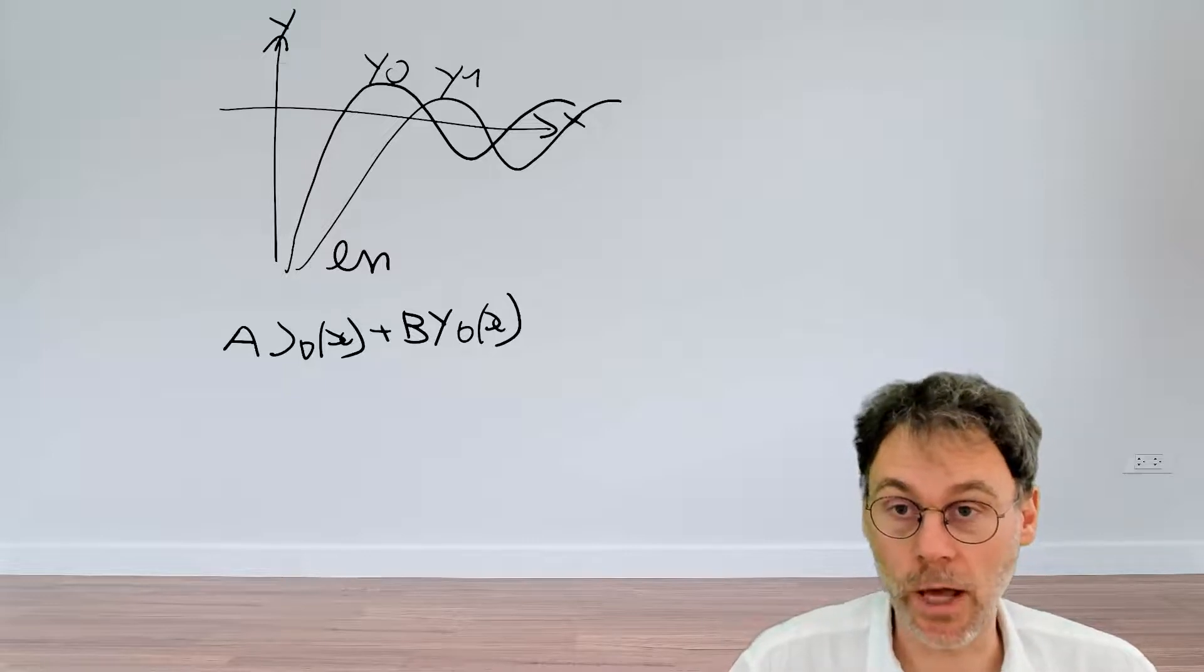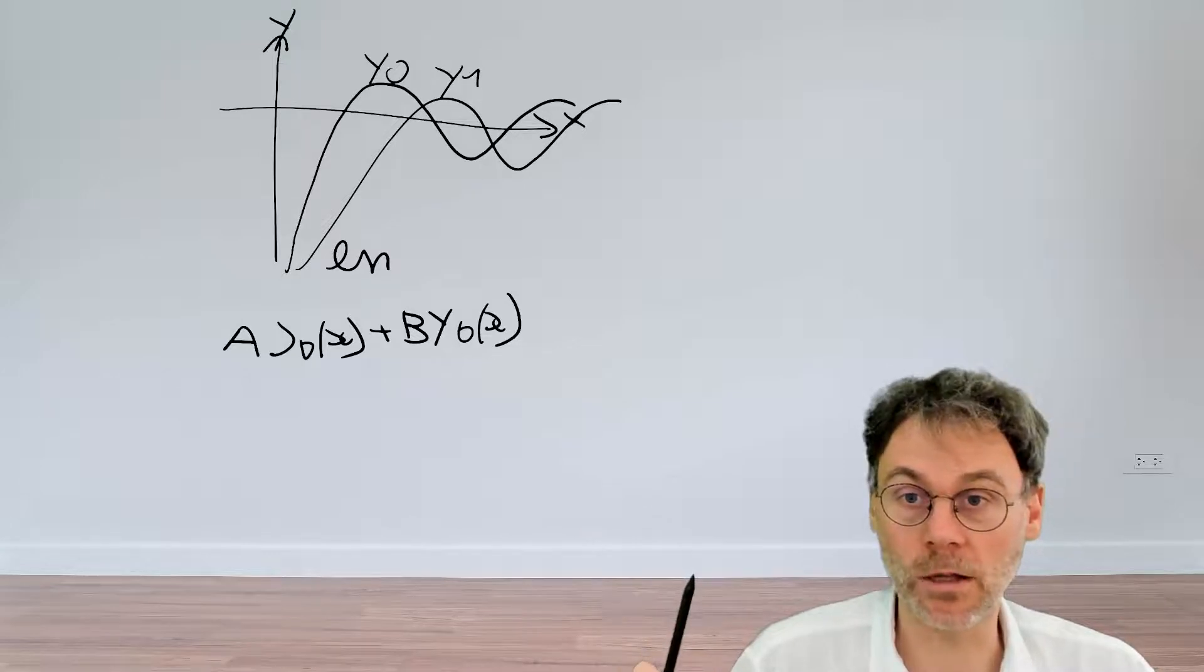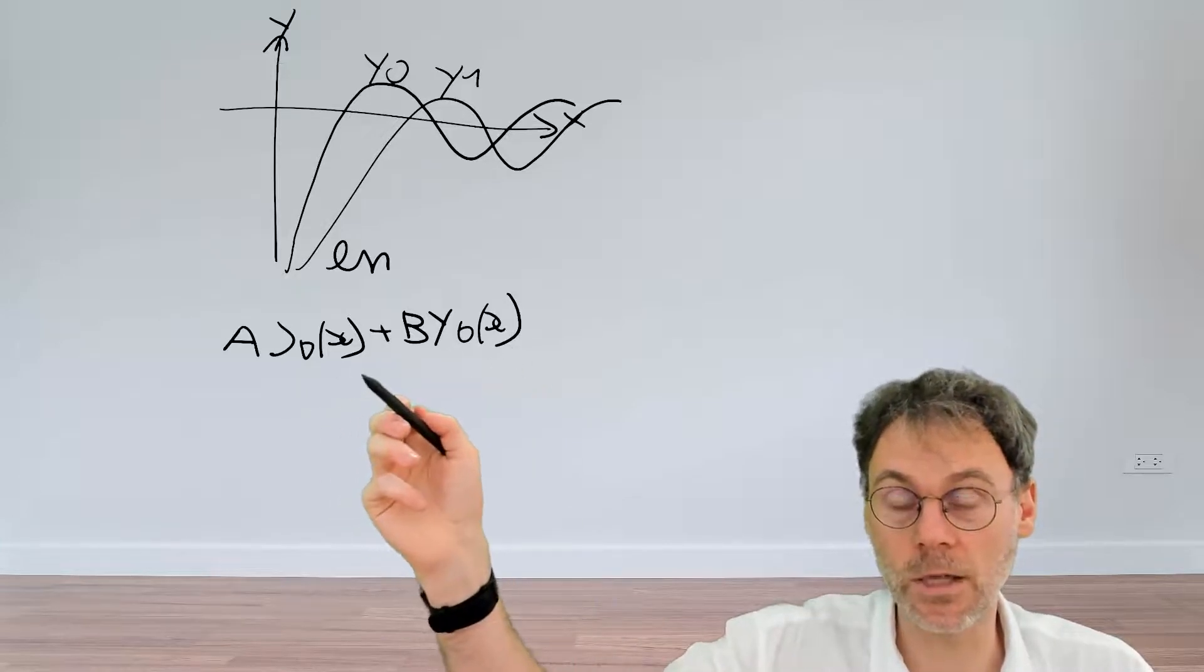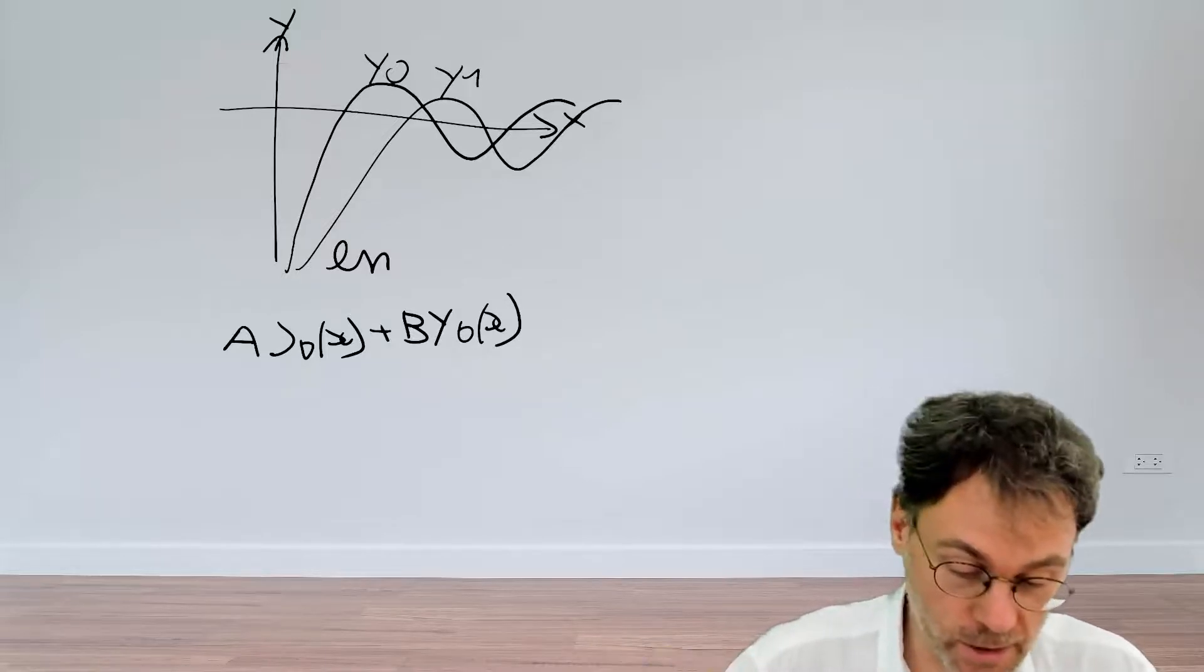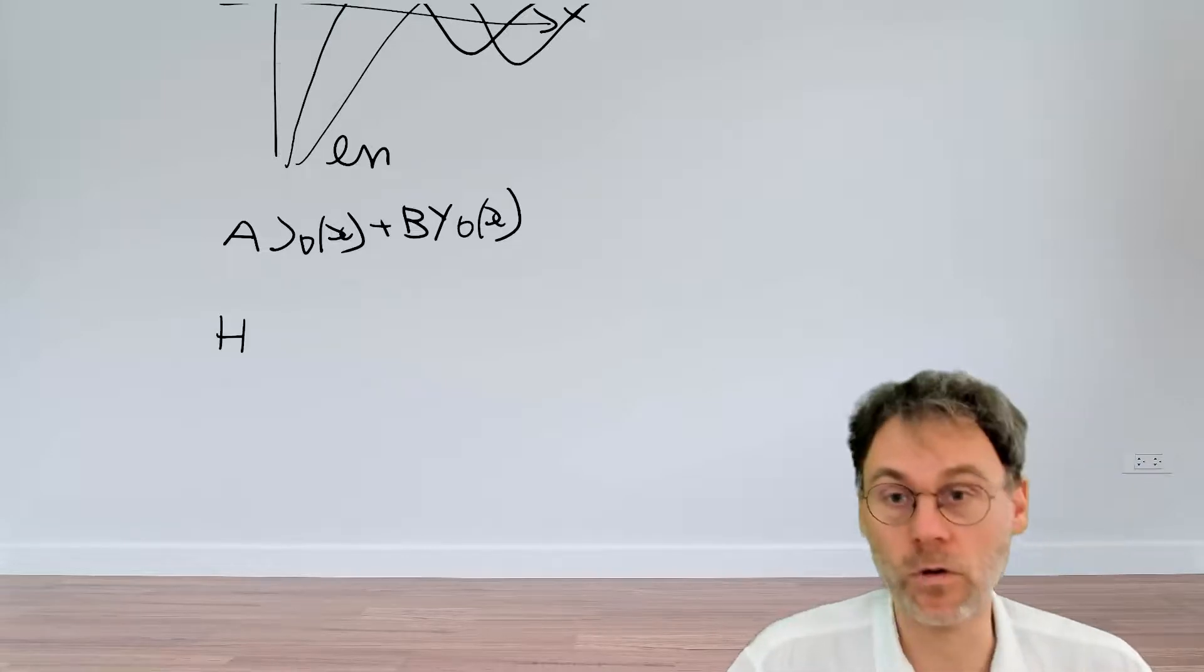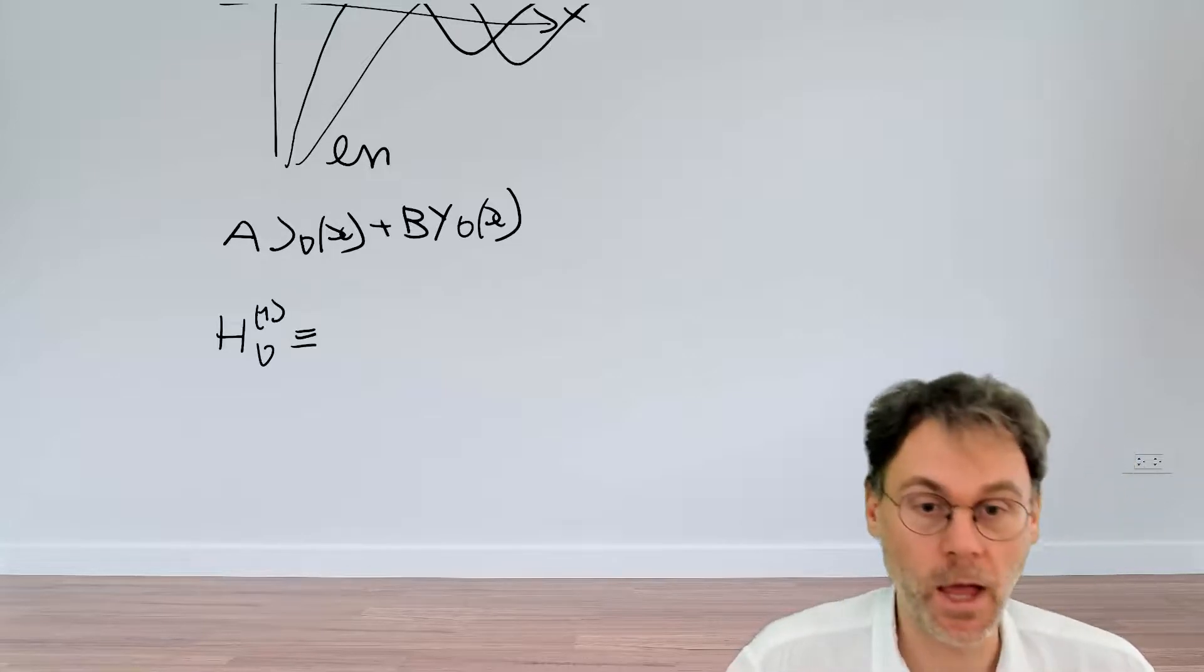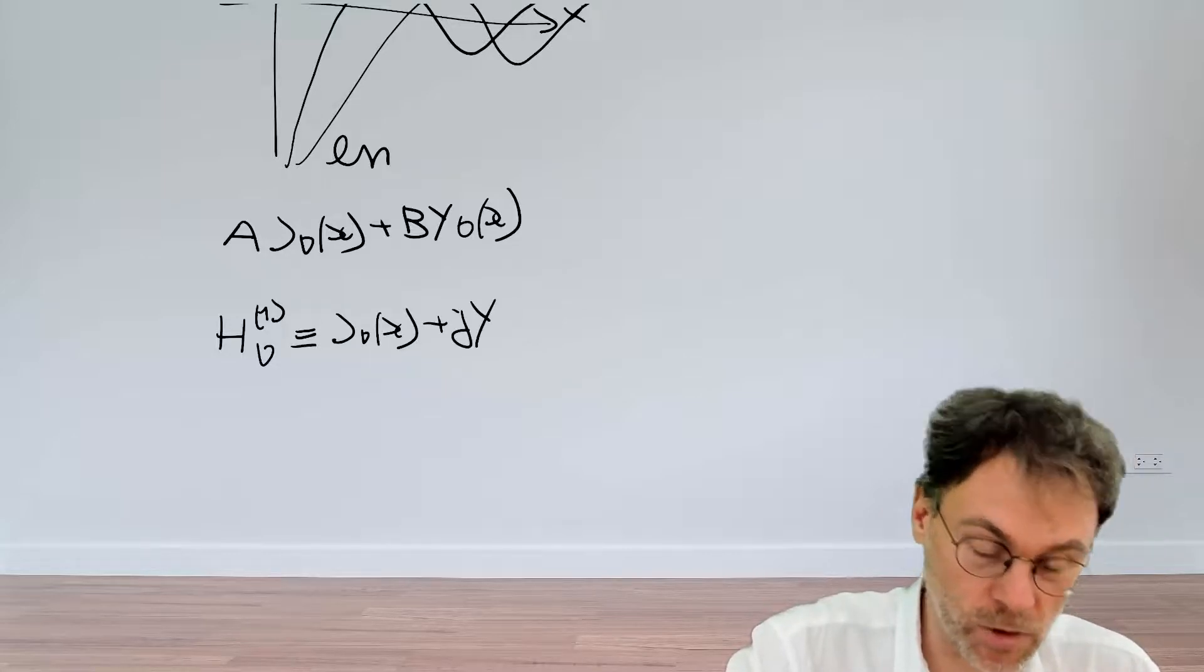However, there are some more games you can play with these new functions that we've introduced. So rather than writing the general solution as follows, we can also introduce a new linear combination of these two guys and then use those linear combinations to express exactly the same general solution. So for example, if we introduce a new function which I denote by H here, which is the Hankel function of the first kind of order ν, and which we will define as J + iY.